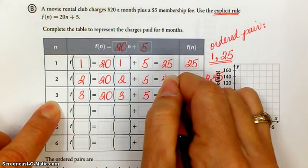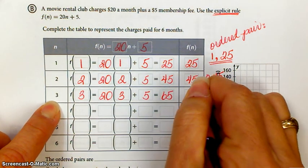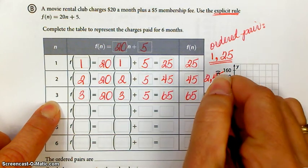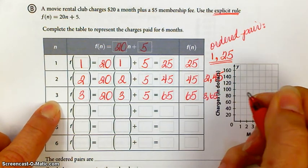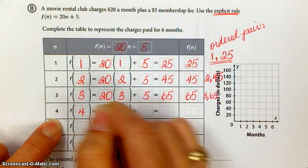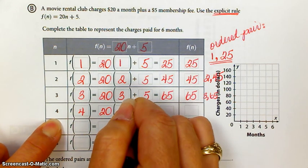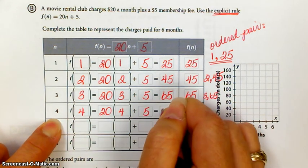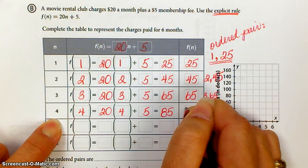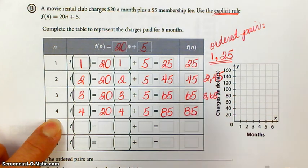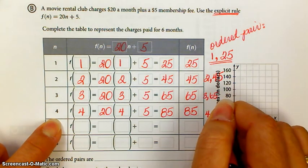Your third term is going to be 65. So 3 comma 65 is your ordered pair. Fourth term is 85, so 4 comma 85.